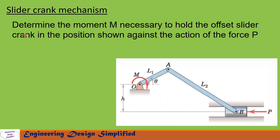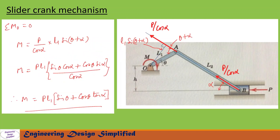Let the angle between the coupler link and horizontal be alpha. Drawing a vertical line from A, we call that y. Then y equals h plus l1·sin(theta), since from O to A the vertical component is l1·sin(theta) and the offset is h. This also equals l2·sin(alpha), since the coupler length is l2 and its angle is alpha. Therefore sin(alpha) equals (h + l1·sin(theta)) / l2, which gives us angle alpha.